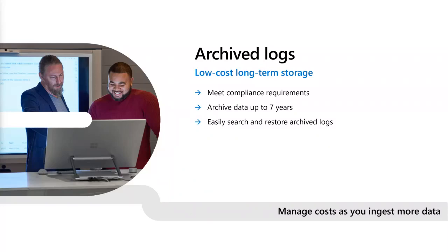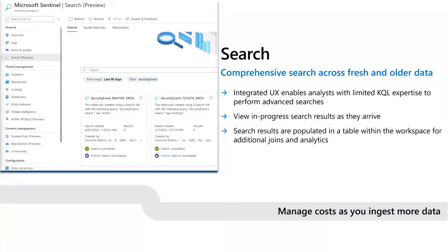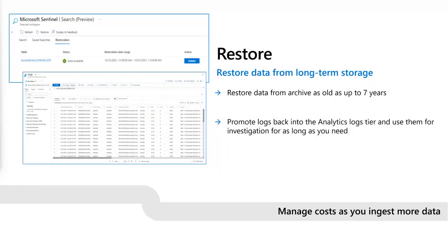Archive logs can be easily accessed via the search blade in the user interface. Search allows you to perform comprehensive searches across both fresh and older data. The integrated user experience enables analysts with limited KQL expertise to perform advanced searches. Search allows you to view results as they arrive, and the results are populated into a table within your workspace, which allows you to perform additional KQL joins and analytics. The restore feature allows you to restore data as old as up to seven years and promotes logs back into the analytics logs tier for investigation for as long as you need.